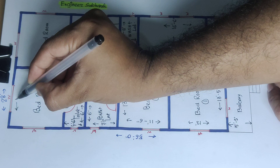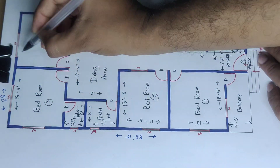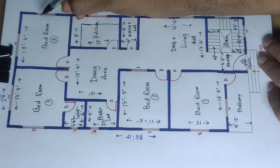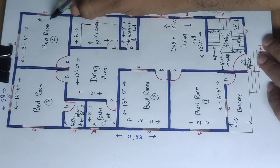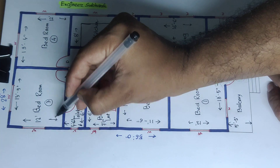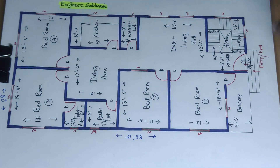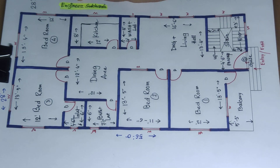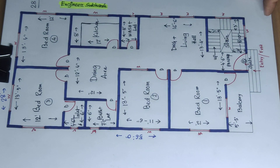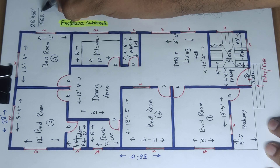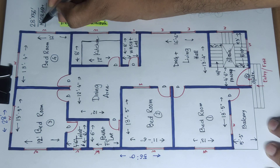13 feet 5 inch. Other bedroom 13 feet 4 inch. Other bedroom 12 feet distance. Other 12 feet distance. Okay, after completing our plan — 28 feet into 56 feet — total square feet: 1568 square feet.